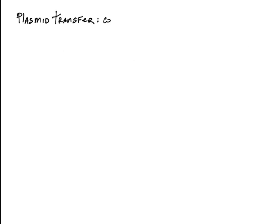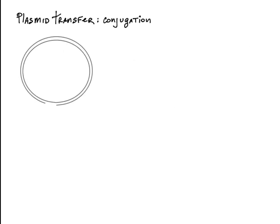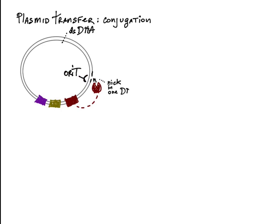Plasmid transfer between bacterial cells. Some plasmids are capable of self-transfer; they encode multiple proteins dedicated to this process. One of such proteins recognizes ORI-T, nicks it, and binds to the 5' DNA terminus.